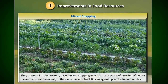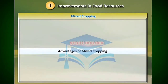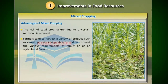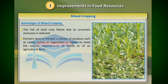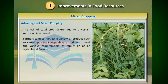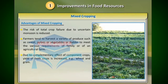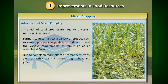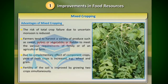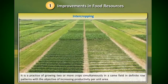Mixed cropping is an age-old practice in our country. Advantages of mixed cropping: the risk of total crop failure due to uncertain monsoon is reduced. Farmers tend to harvest a variety of produce such as cereals, pulses, or vegetables to meet the various requirements of the family or agricultural farm. Due to the complementary effect of component crops, yield of both crops is increased — for example, wheat and gram. Fertility of the soil is improved by growing two crops simultaneously, and chances of pest infestation are greatly reduced.